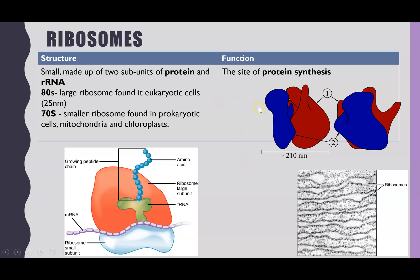Next, ribosomes. You can see here images of a ribosome from different angles, showing the two subunits they are made up of. Ribosomes are made of two different molecules: proteins and ribosomal RNA, or rRNA. This creates a smaller subunit and a slightly larger subunit. Eukaryotic cells, which is what we're discussing, have larger ribosomes, whereas prokaryotic organisms also have ribosomes but they are smaller in size. The function of ribosomes is as the site of protein synthesis.